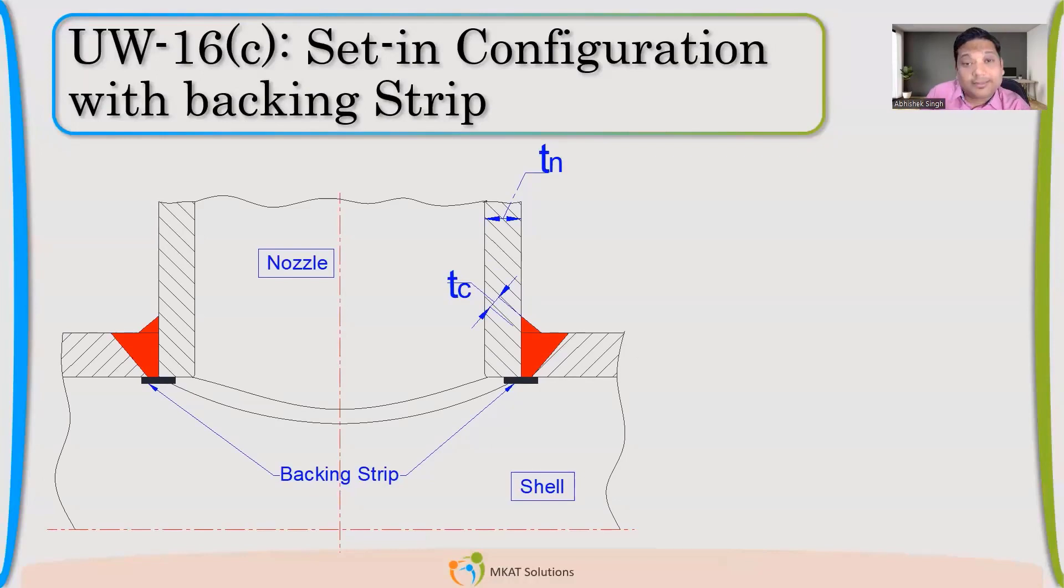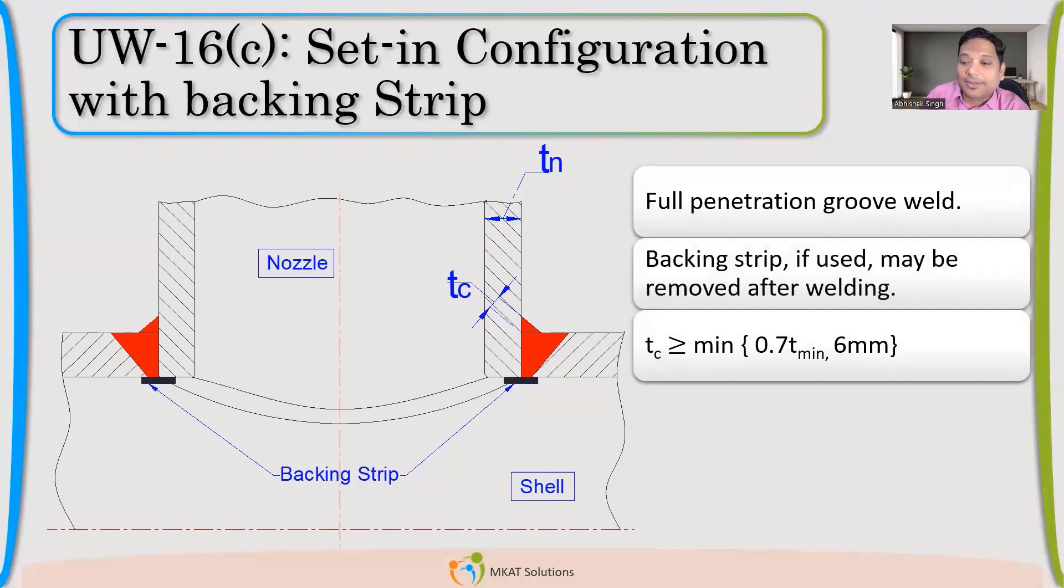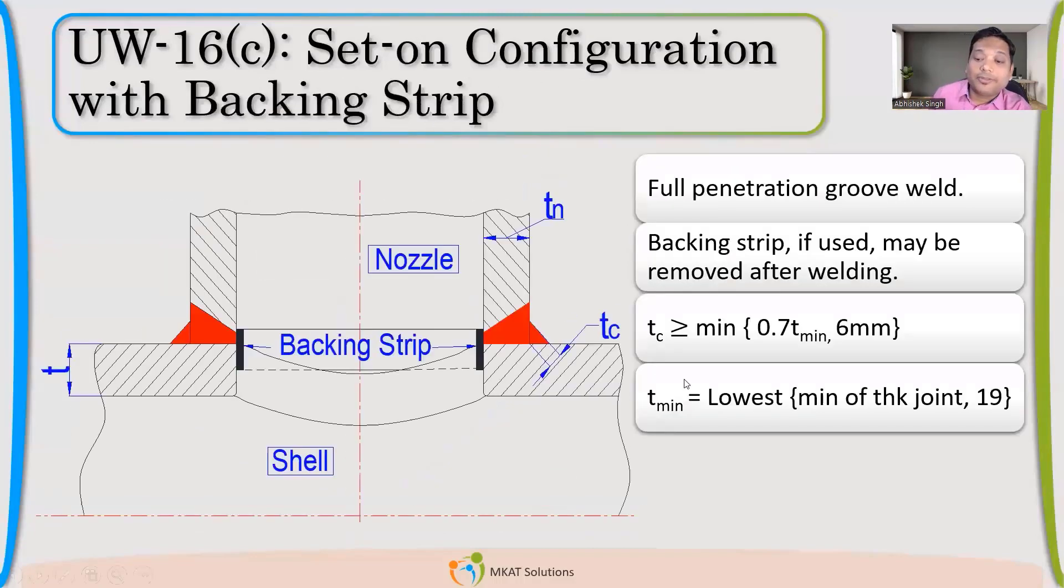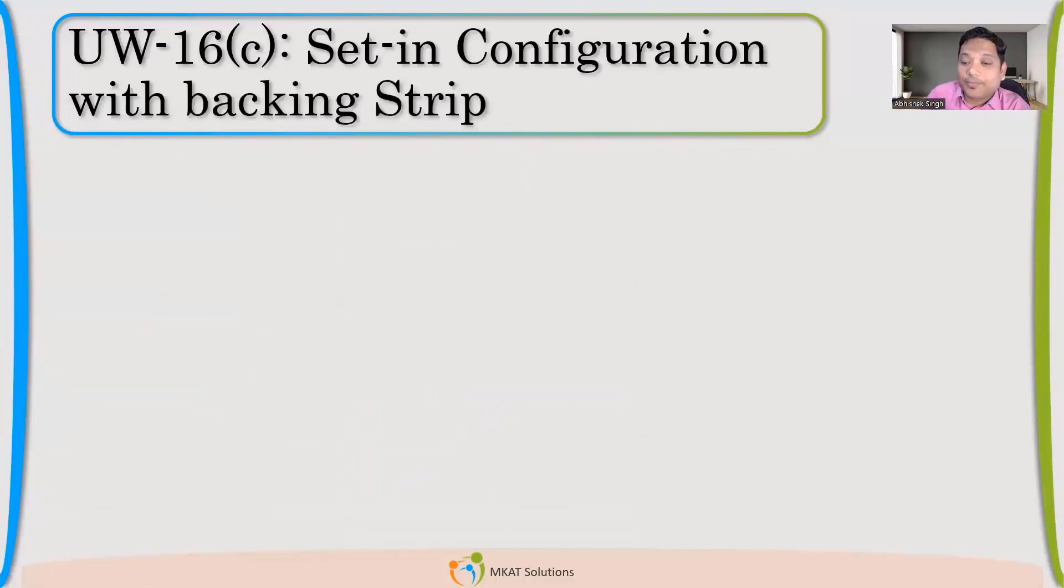Now, we have come to set-in nozzles, where nozzle is going inside the thickness of the shell. No other change. Still, we are able to achieve full penetration. We have used backing strip here. Small fillet weld. What do you think? What will be the TC value? Same or different? Same. Great. That is what it is. It's still same. So you remember one more thing, which is very important when we discussed about T minimum, there is one more parameter, which is very, very important, which is the lowest of minimum thickness and 19 mm. So if your thickness is very high, then you just have to take 19 mm. You don't have to go up to the higher thicknesses. So please remember when we are calculating T minimum for high thicknesses.